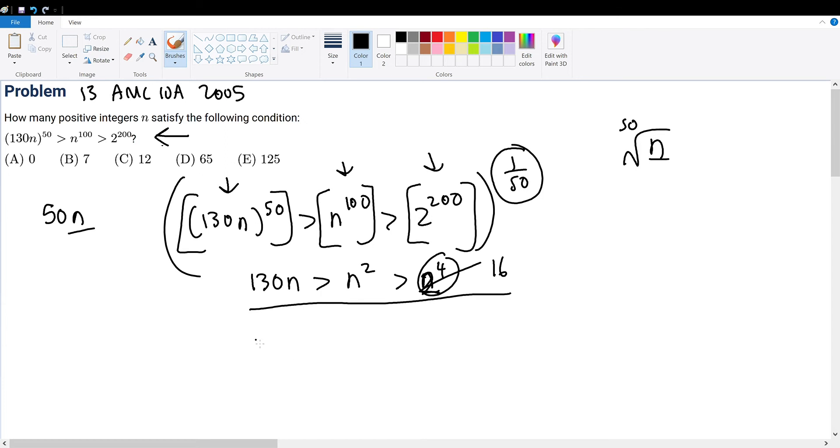We can break this up from here. n squared is less than 130n, n squared is greater than 16. Taking the square root on both sides will not change the inequality. So this becomes n is greater than 4. Taking the square root or dividing n on both sides will not change the inequality. Therefore n is less than 130.